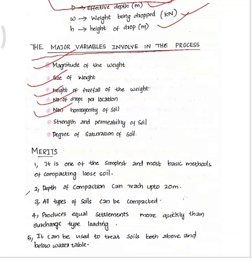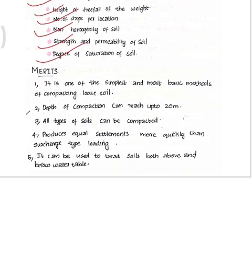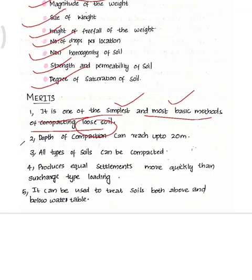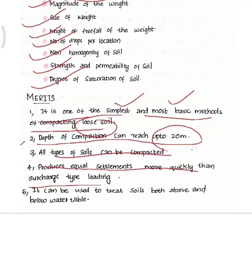Dynamic compaction is one of the simplest and most basic methods of compacting loose soil. The depth of compaction can reach 20 meters, covering all types of soil. It produces equal settlements more quickly than surcharge-type loading, and it can be used to treat soils above and below the water table.